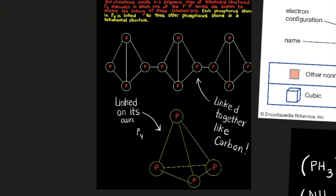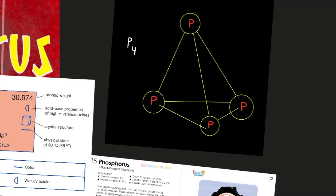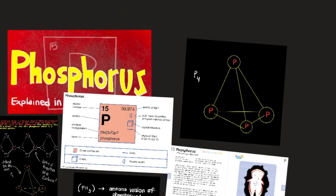Here is an allotrope of phosphorus that we're going to talk about. Red phosphorus exists in a polymeric chain of tetrahedral structured P4 molecules in which one of these double P4 bonds are broken to enable the linking of these tetrahedrons. Each phosphorus atom in P4 is linked to three other phosphorus atoms in a tetrahedral structure. Here's a previous version — it was a more triangular-like molecule with a triangle at the bottom.